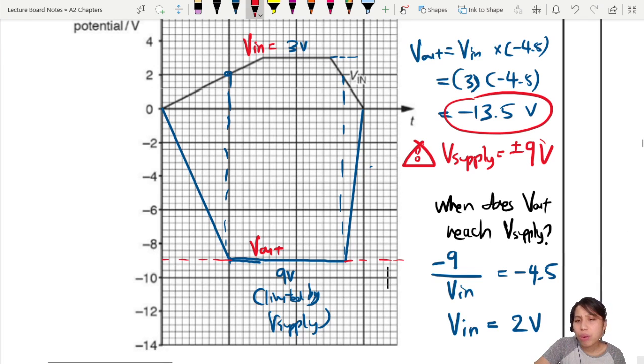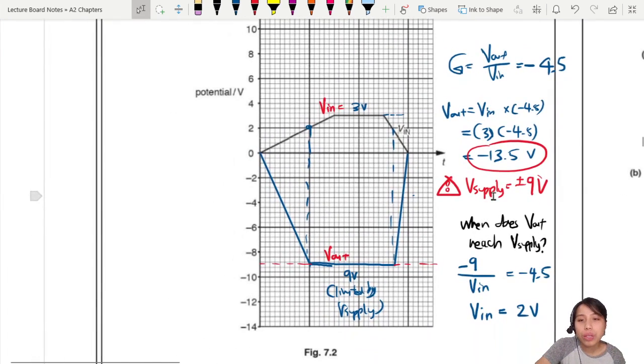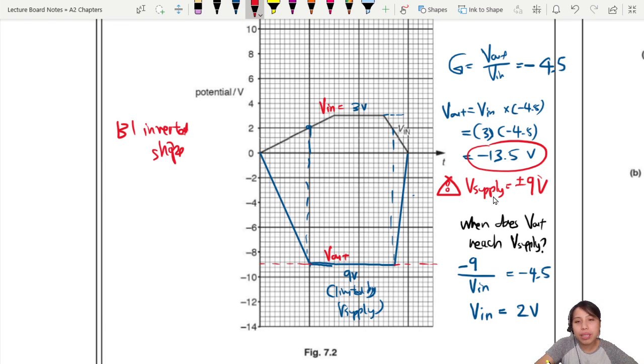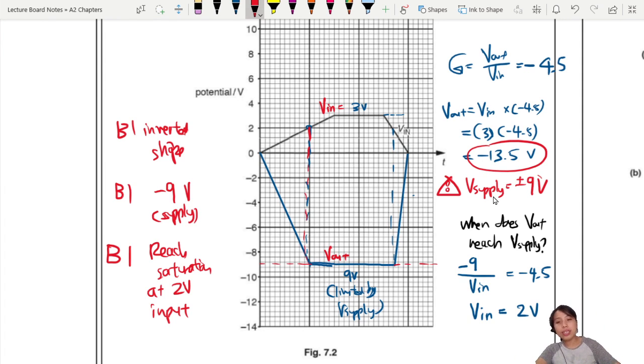So the marks here come for three marks. First one is you have inverted the whole graph, the shape. The whole shape becomes upside down. Correct? Second mark, if you draw a line at 9 volts, means you are limited by the supply. If you knew that - a lot of people, they go and draw negative 13.5. You forgot, power supply is the limit. Cannot go bigger than that. Then the third one is you reach saturation. Saturation means you hit the limit of power supply at 2 volt input. So it means at 2 volts here, you reach saturation. So that's how you can check for three marks.